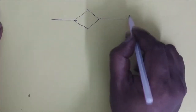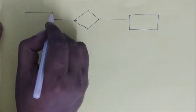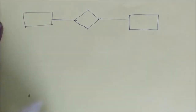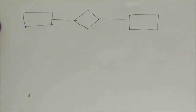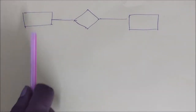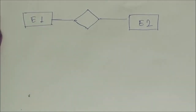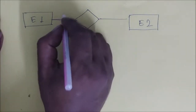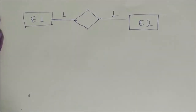So say we have two entities — entity one and entity two — and the relation between them is represented by a diamond shape box. If there is a one-to-one relationship between them, we give the label one on both sides.